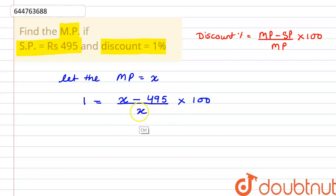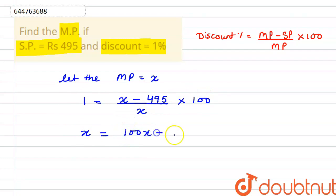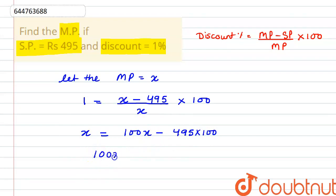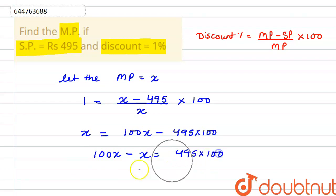Now if we cross multiply, x will go to the other side. So x is equal to 100 multiplied by x minus 495, into 100. If we interchange the values, this part will go on the left hand side and x will go on the right side. So we write 100x minus x is equal to 495 multiplied by 100.